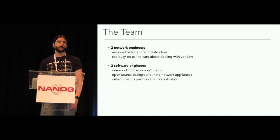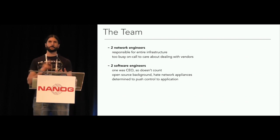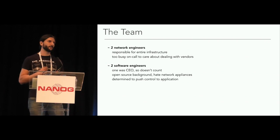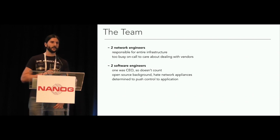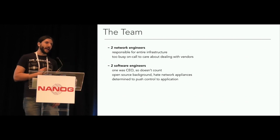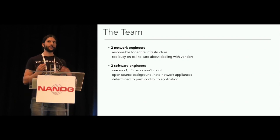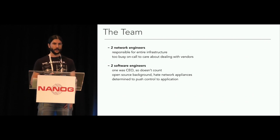In 2013, the team was mostly comprised of two network engineers dealing with everything — operations, provisioning, procurement — too busy to work with vendors on feature requests. We also had two software engineers, although one was the CEO so arguably he didn't count. They both had an open source background and hated network vendors. And they were determined to push the control of the network to the application rather than controlling the network from the network itself via policies.